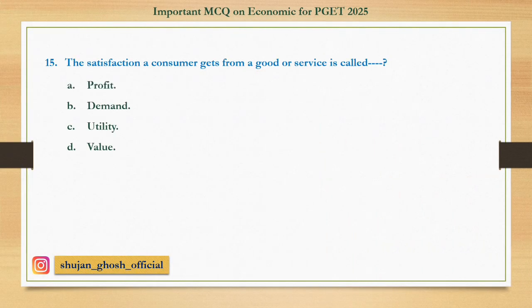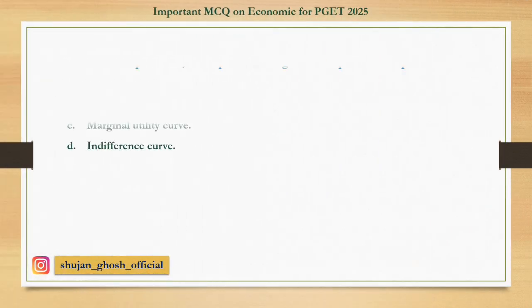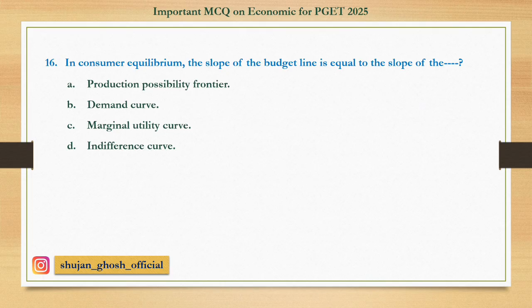Question number fifteen: The satisfaction a consumer gets from a good or service is called — option A: profit; B: demand; C: utility; D: value. Answer: utility. Question number sixteen: In consumer equilibrium, the slope of the budget line is equal to the slope of the — option A: production possibility frontier; B: demand curve; C: marginal utility curve; D: indifference curve. Answer: indifference curve.